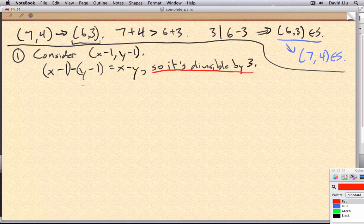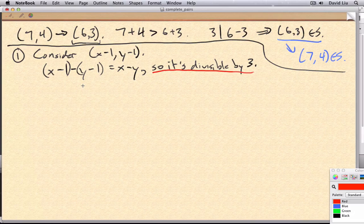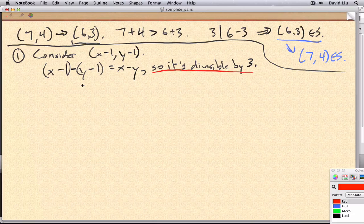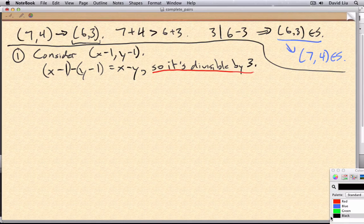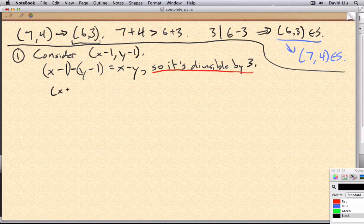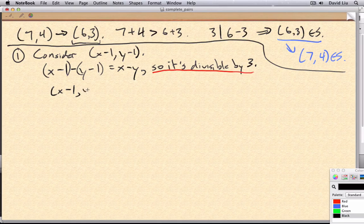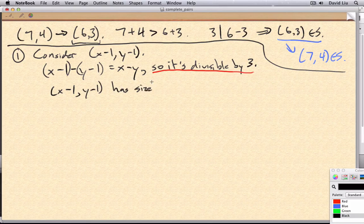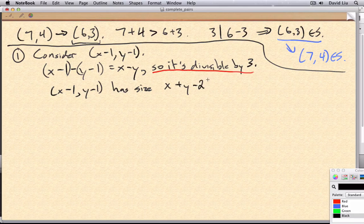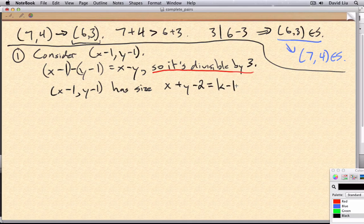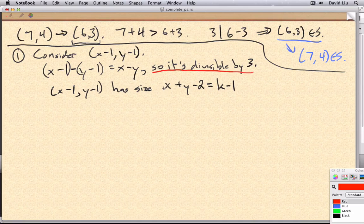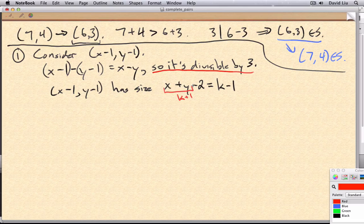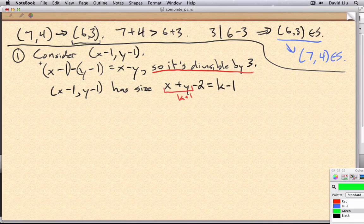This by itself isn't enough to use the induction hypothesis. Because remember, the induction hypothesis only applies when the size is smaller. So let's check that. The size for this ordered pair is k minus 1. Of course, because x plus y, that's equal to k plus 1. So it has a smaller size. These two facts together